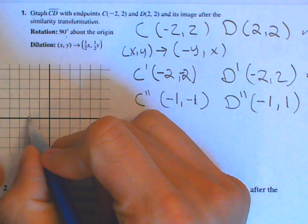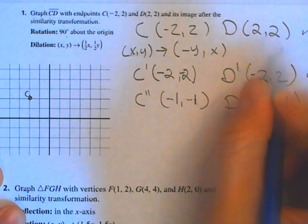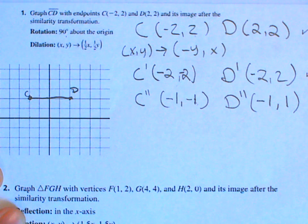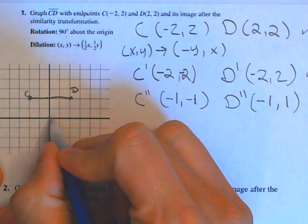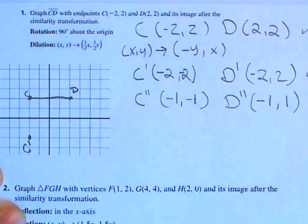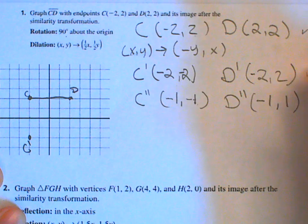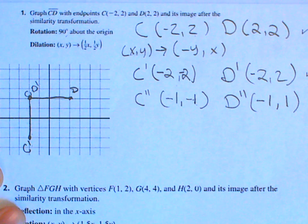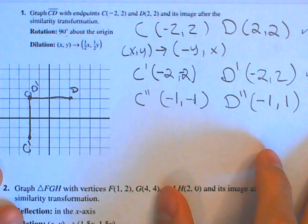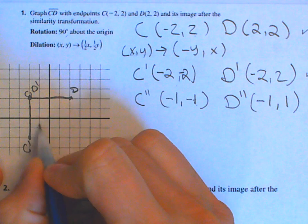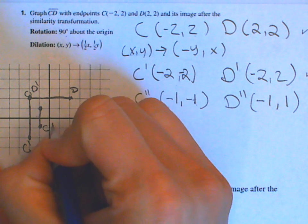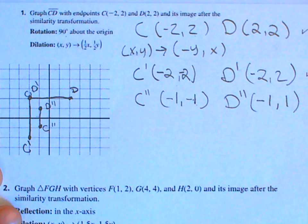Now we graph all three sets. The pre-image: C is at (negative 2, positive 2) and D is at (2, positive 2). After the 90-degree rotation: C prime is at (negative 2, negative 2) and D prime is at (negative 2, 2) — they share the same x-coordinate. After the dilation: C double prime is at (negative 1, negative 1) and D double prime is at (negative 1, 1). This composition involves a dilation, which makes it a similarity transformation.